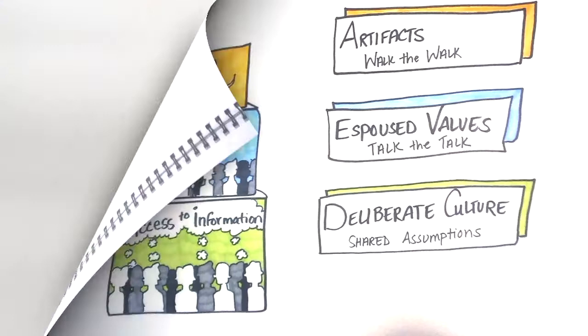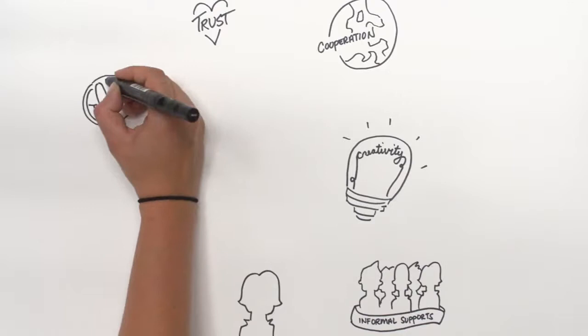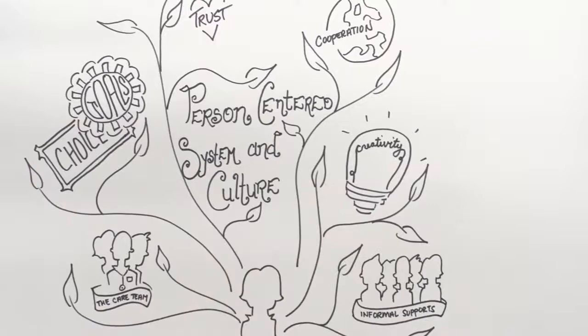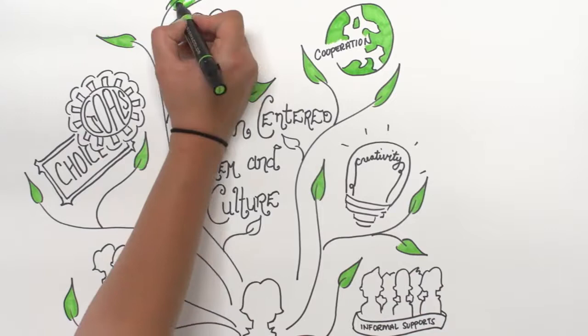When we are able to utilize these three tiers in creating a person-centered system, we are able to shift from a methodology of service delivery that focuses on a menu of services to a focus on informal supports, individualized choices and goals, and a process of planning that promotes trust, cooperation, and creativity.